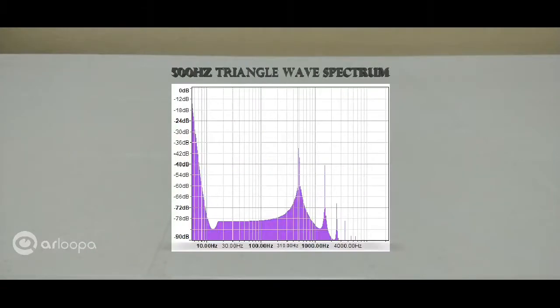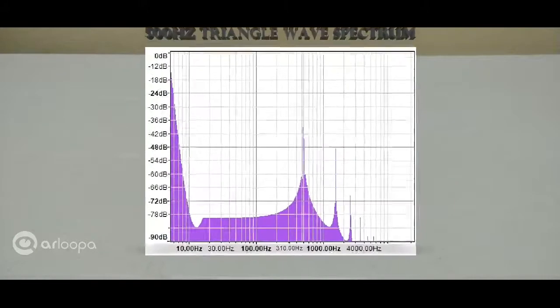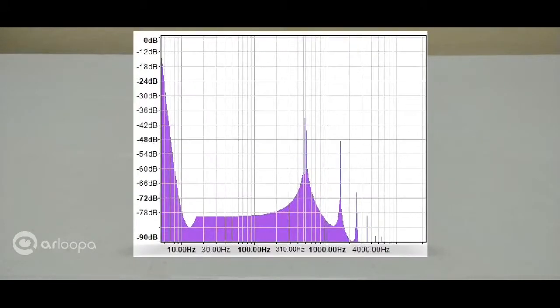Alright, this is a frequency spectrum of a 500Hz triangle wave. Notice the dominant frequency, which is 500. And the next frequency, which is a harmonic, is an odd harmonic. So 500 into 3, which is 1500, that's where we see the second peak at. And the next peak is 500 times 5, which is 2500, and so on.